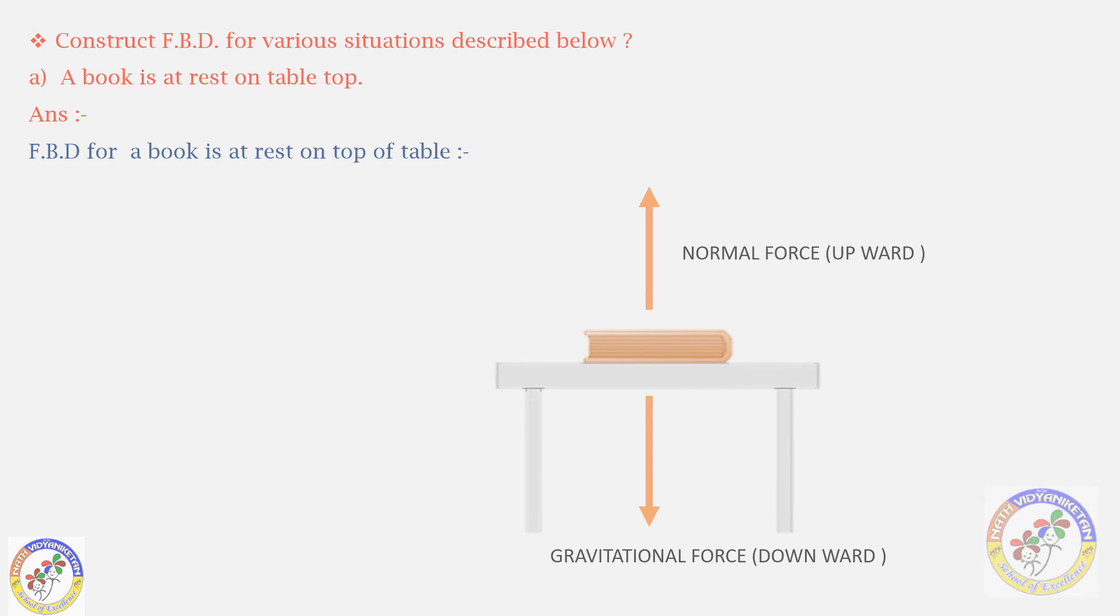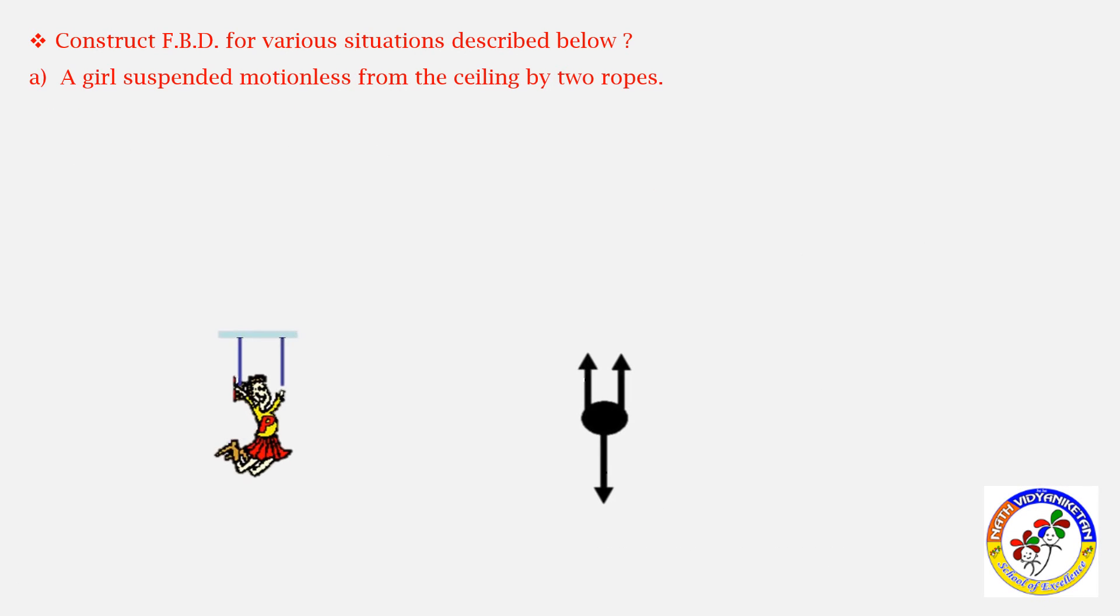Next example: an object suspended. When an object is suspended, we show downward arrow for gravitational force. In the free body diagram, there are tension forces acting upward, and gravitational force acting downward.